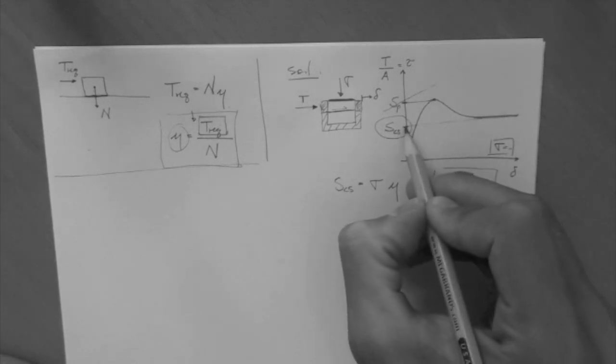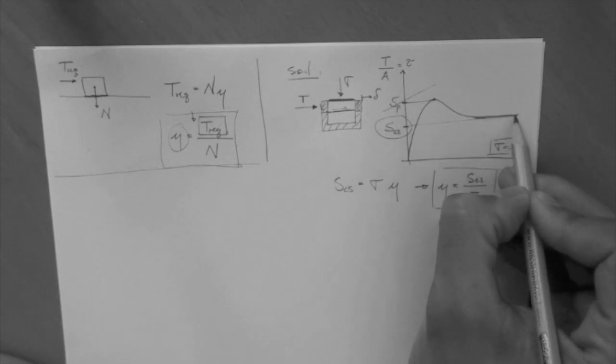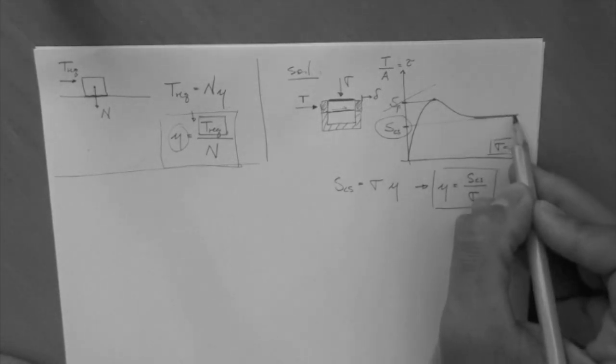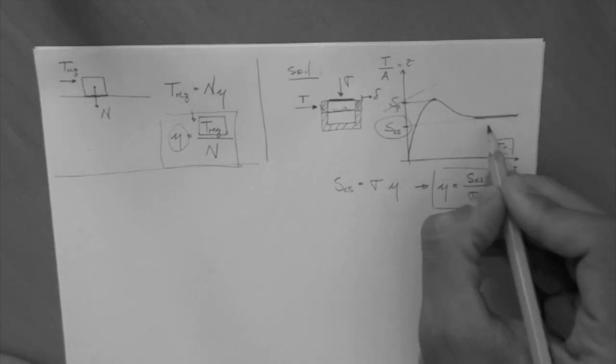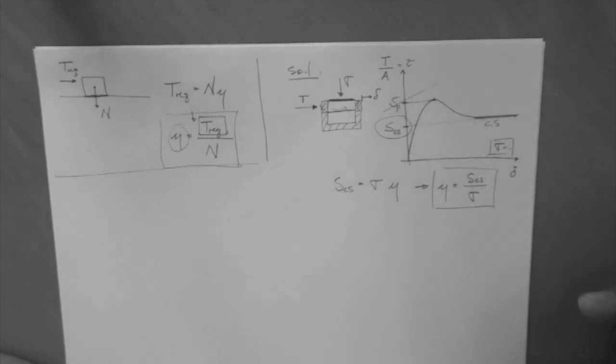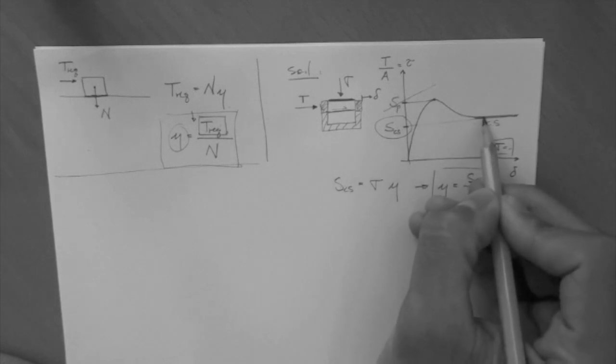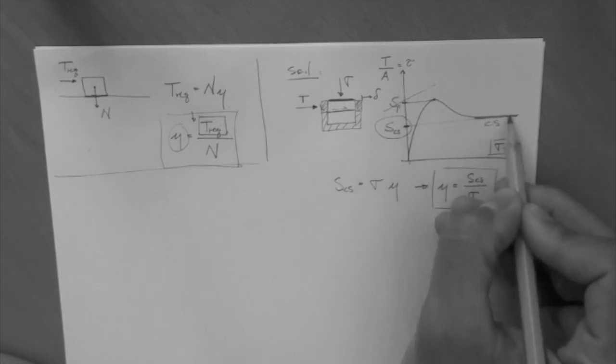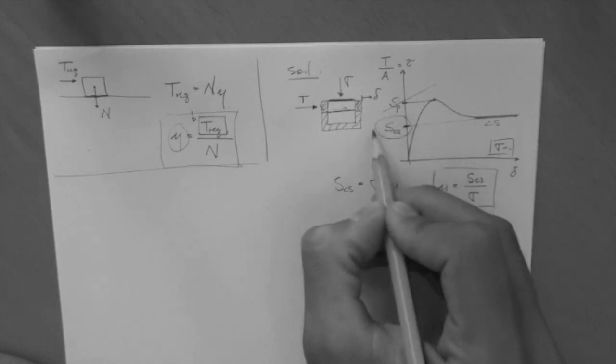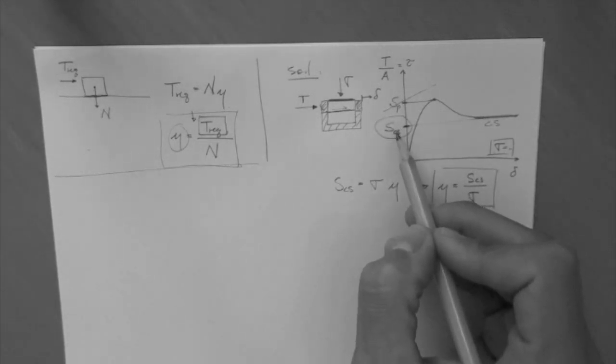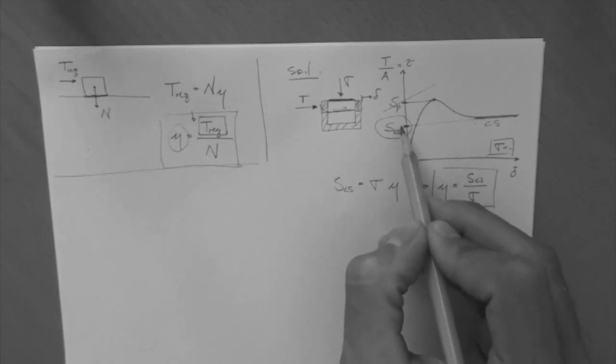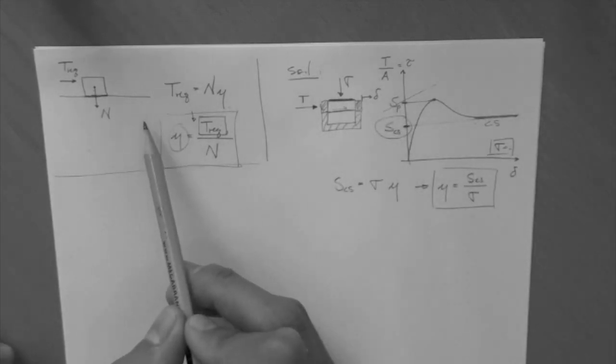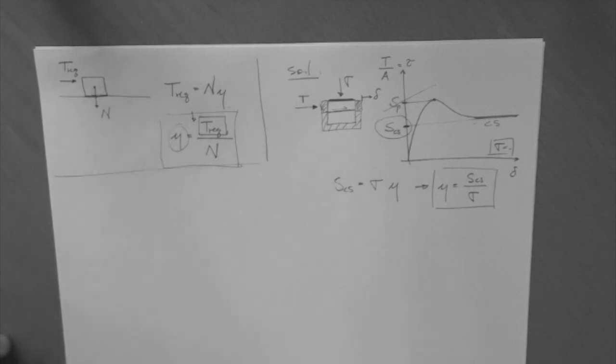where increasing the deformation doesn't lead to any changes in resistance. This critical state region here, we're going to assign the stress associated with that, the shear stress. And we're going to assign that shear stress the term strength. So, that's our definition of strength for this system. And our definition of strength for this one is simply the incipient motion of the block.